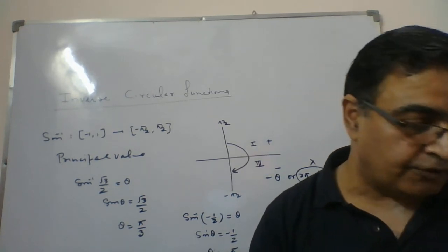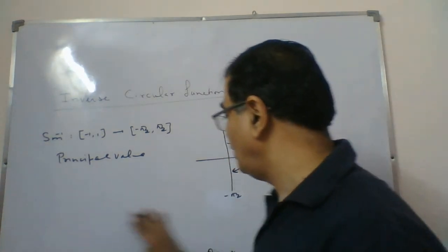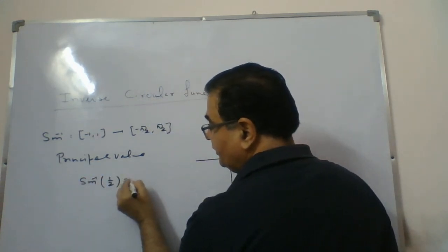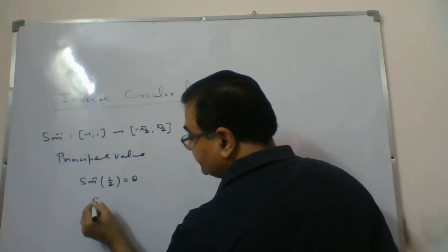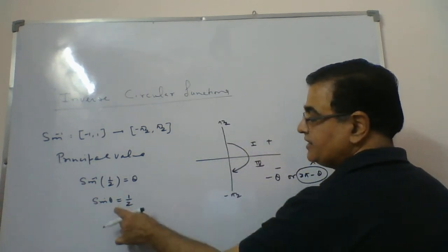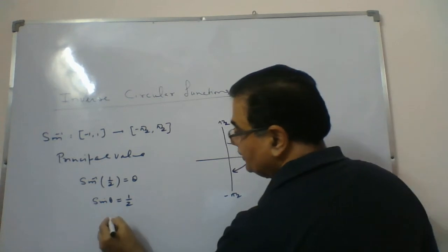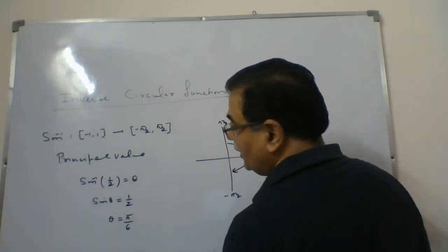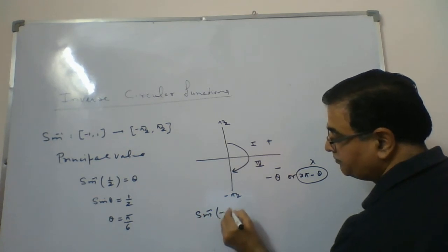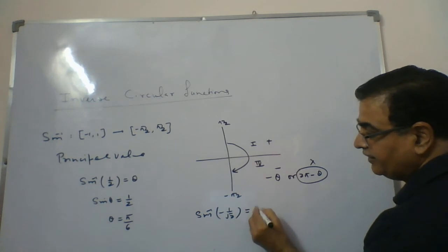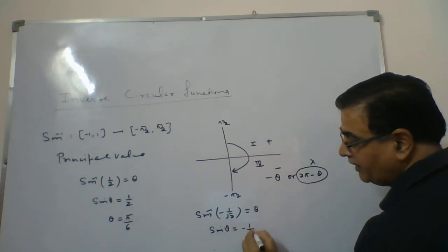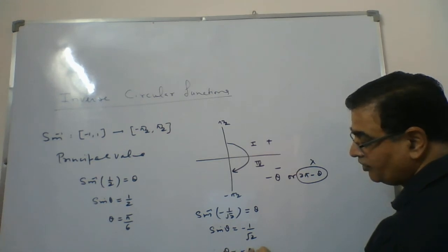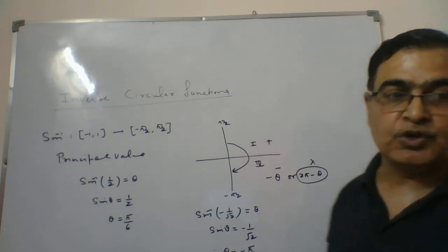One more: find the principal value of sine inverse of half. Take this as theta; sine theta equals half. As it is in the first quadrant, theta is pi by 6. Similarly, for sine inverse of minus 1 by root 2, let this be theta. Sine theta is minus 1 by root 2. As it is negative, it goes into quadrant 4, and theta comes out to be minus pi by 4. These values are simply called the principal values of the function.